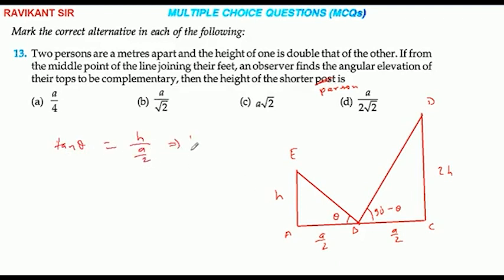What happens? Tan theta equals 2h by a/2 as equation first. And tan(90 - theta) equals 2h by a/2. What happens? Cot theta equals 4h by a as equation second.